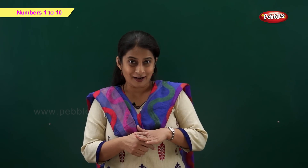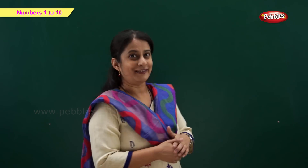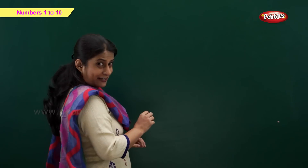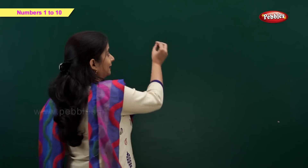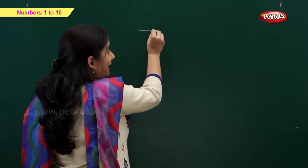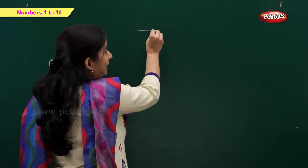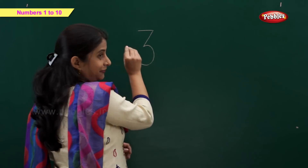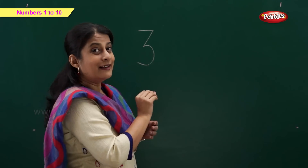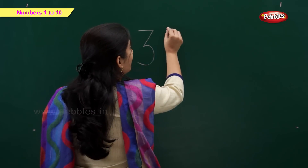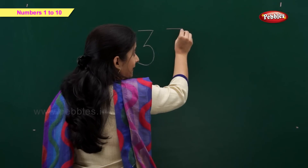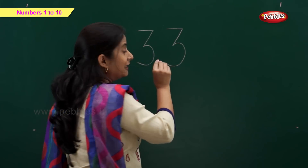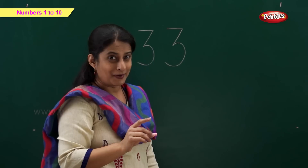Now let's write number 3. Yes, you're learning quite fast. For writing number 3, what we need? We need a sleeping line, a slanting line and a curve. Let's write again — a sleeping line, a slanting line and a curve. That makes number 3.